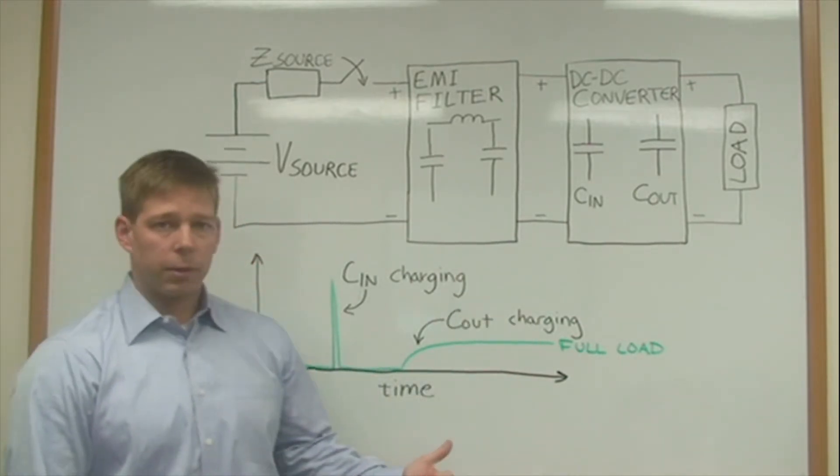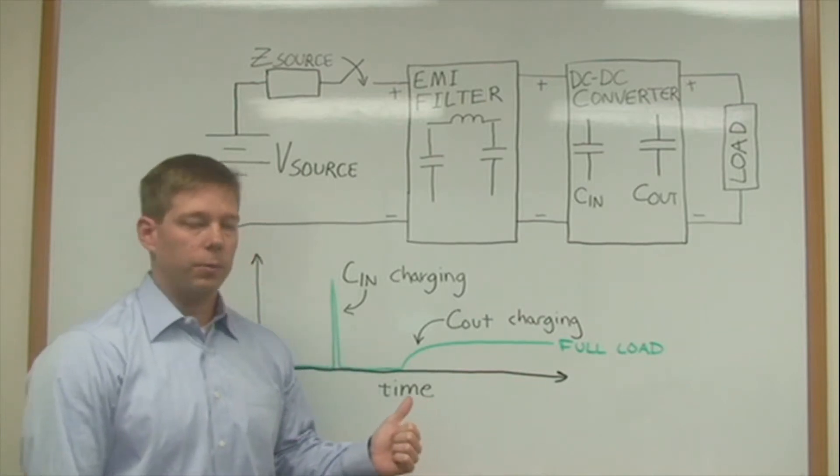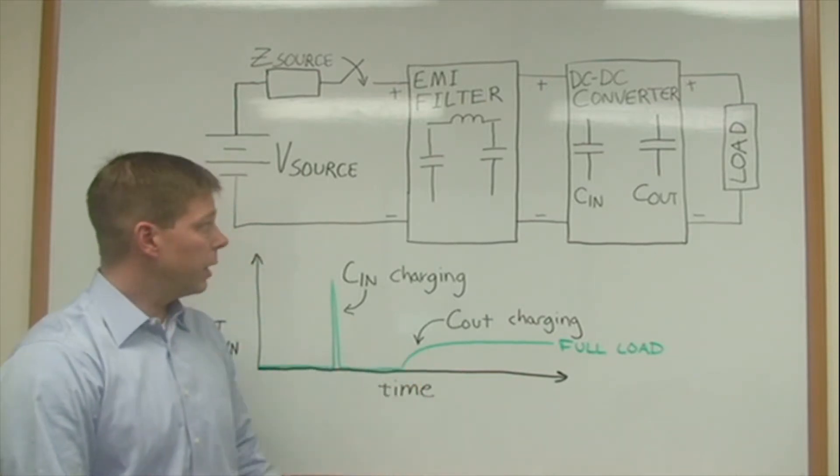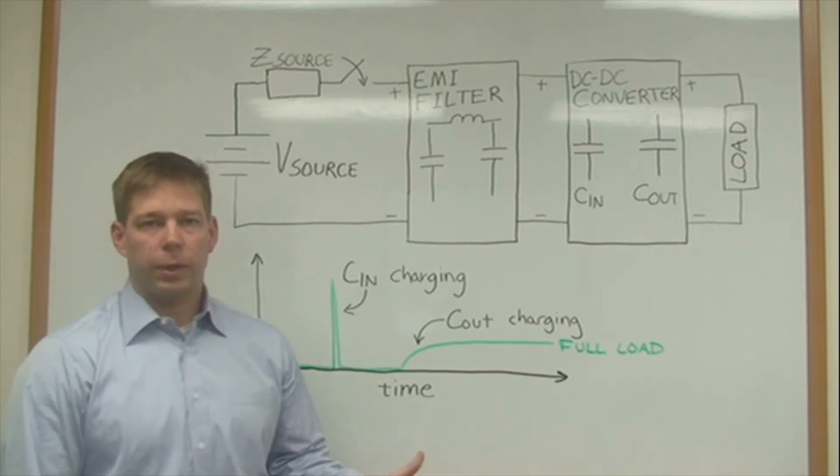The inrush current that occurs on the startup of a DC to DC converter system like this is composed of two regions.